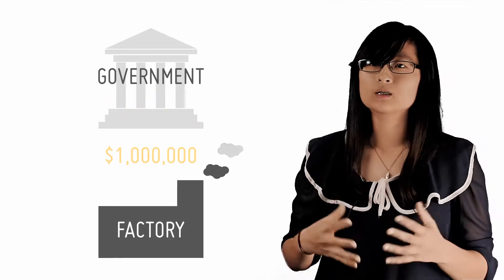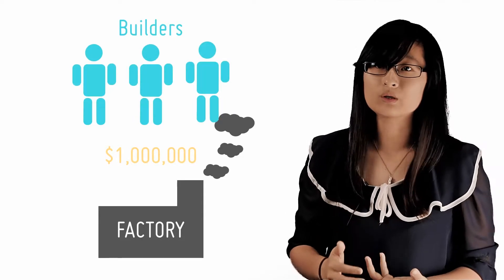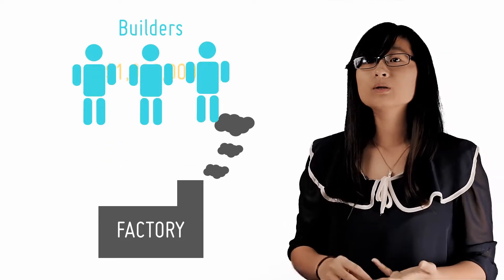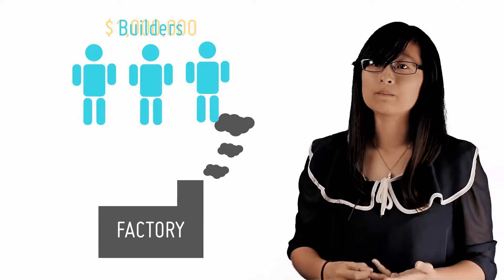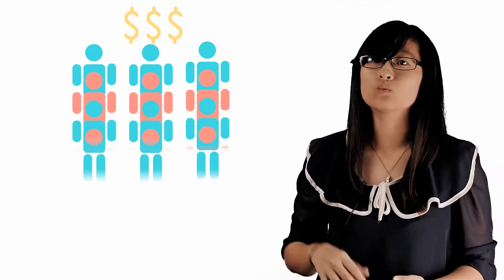So let's say the government spends one million dollars to build a factory. The money does not disappear, rather it becomes wages to the builders, revenue to suppliers, etc. And the builders will have higher disposable income and may spend that income on goods and services. So the aggregate demand will also rise.